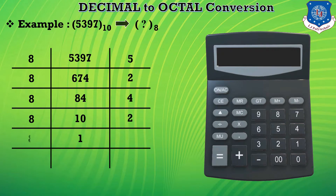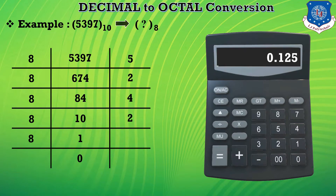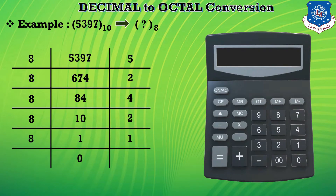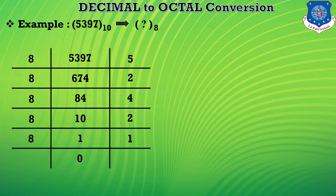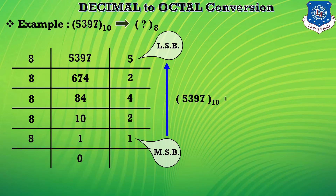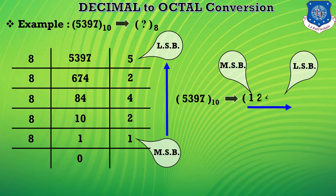Now 1 is divided by 8 and we get the answer 0.125. Here 0 becomes the quotient and the remaining term 0.125 is multiplied by 8 to give us the final remainder of 1. Now we assign MSB and LSB to the remainders. The answer is that 5397 in decimal is converted to octal as 12425.